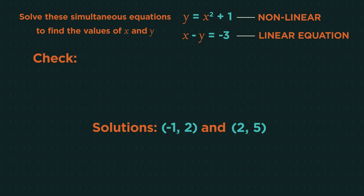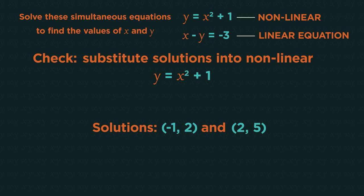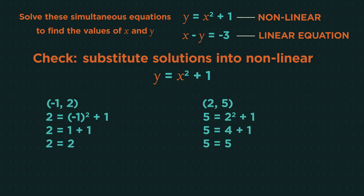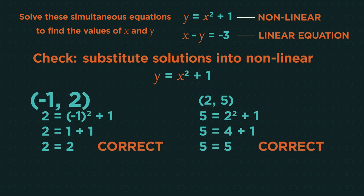As always with maths we should double check our answers. Substitute the solutions negative one two and two five into the non-linear equation. The negative one two: two equals negative one squared plus one, two equals two which is correct, and the same for two five.